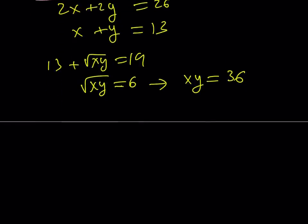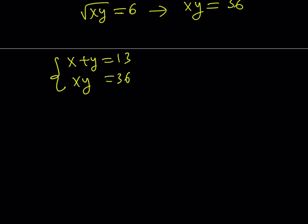So now we get the system x plus y is equal to 13, and xy is equal to 36. So you're kind of looking for two numbers whose sum is 13 and whose product is 36. And as you know, those numbers are 9 and 4 or 4 and 9. And this brings us to the end of this video.